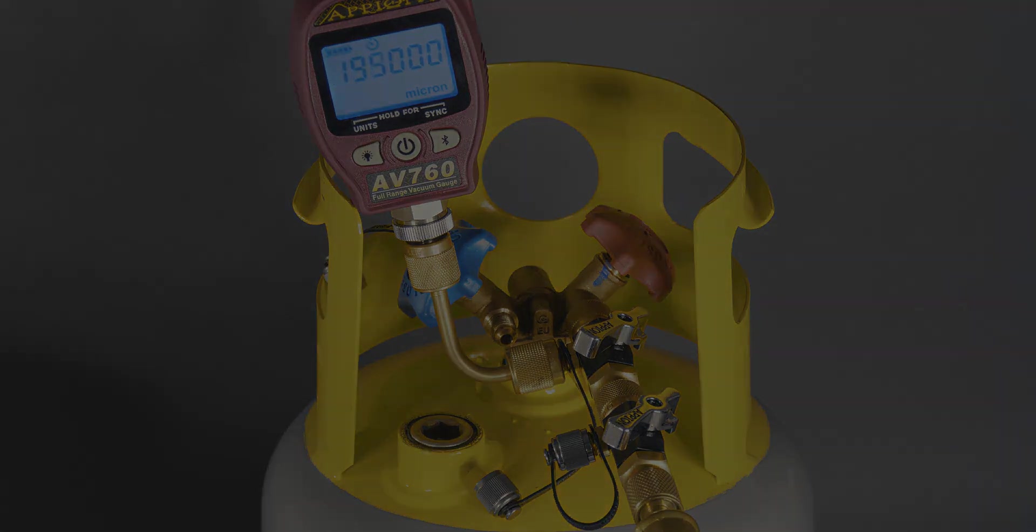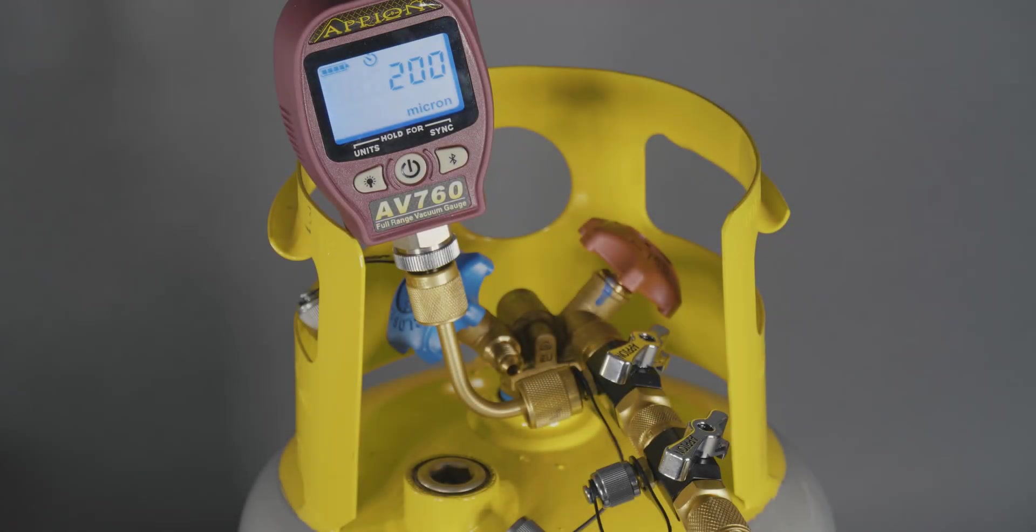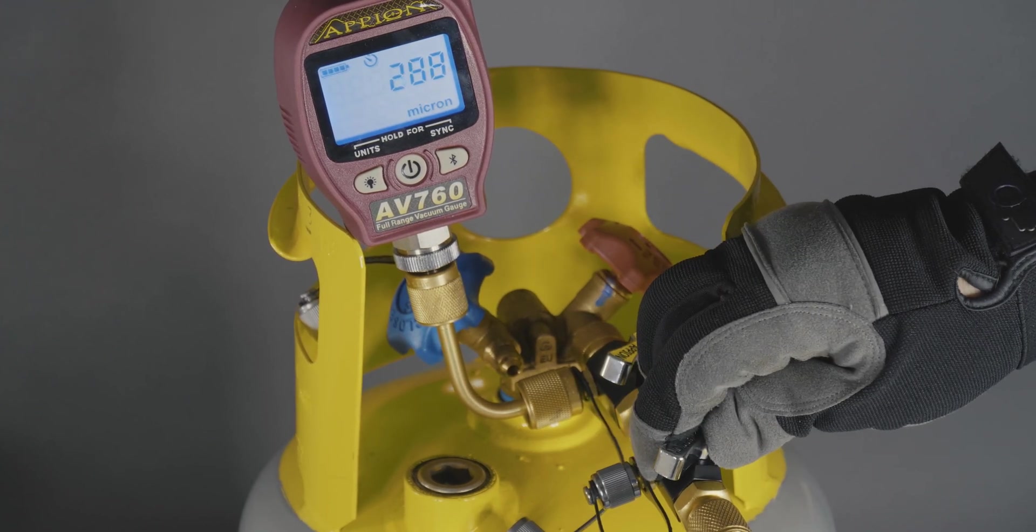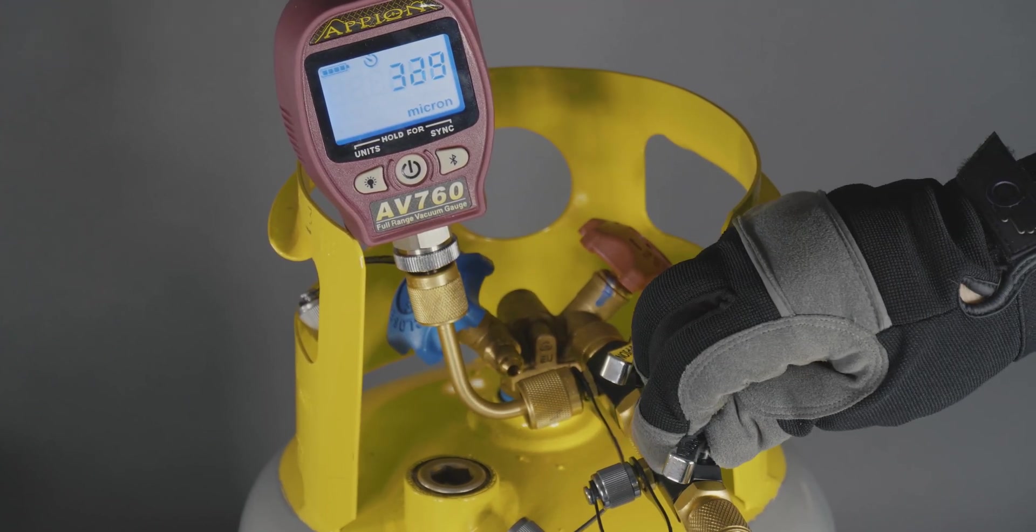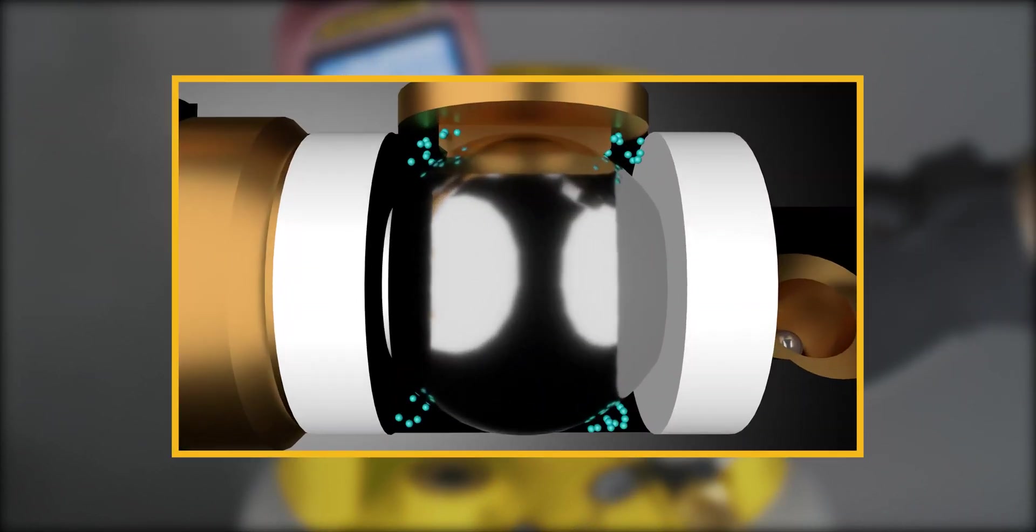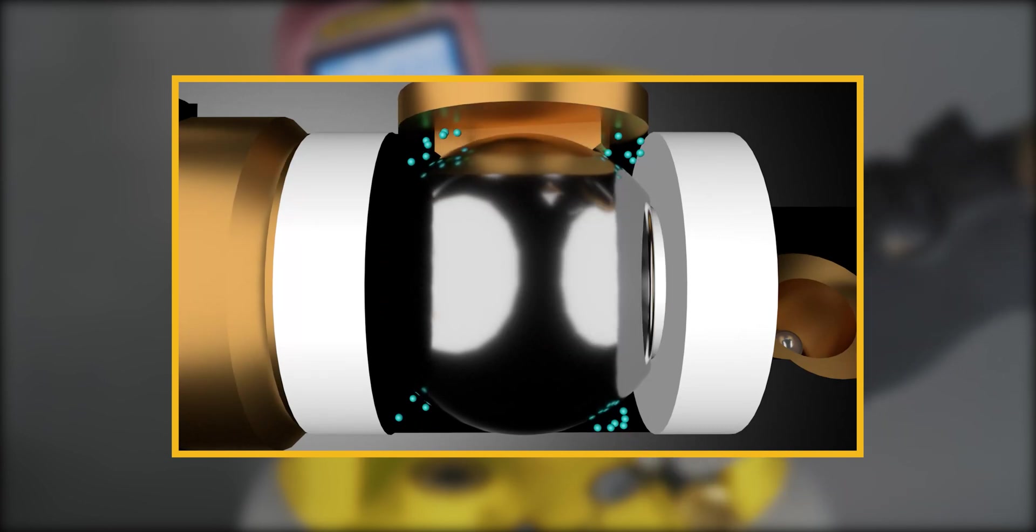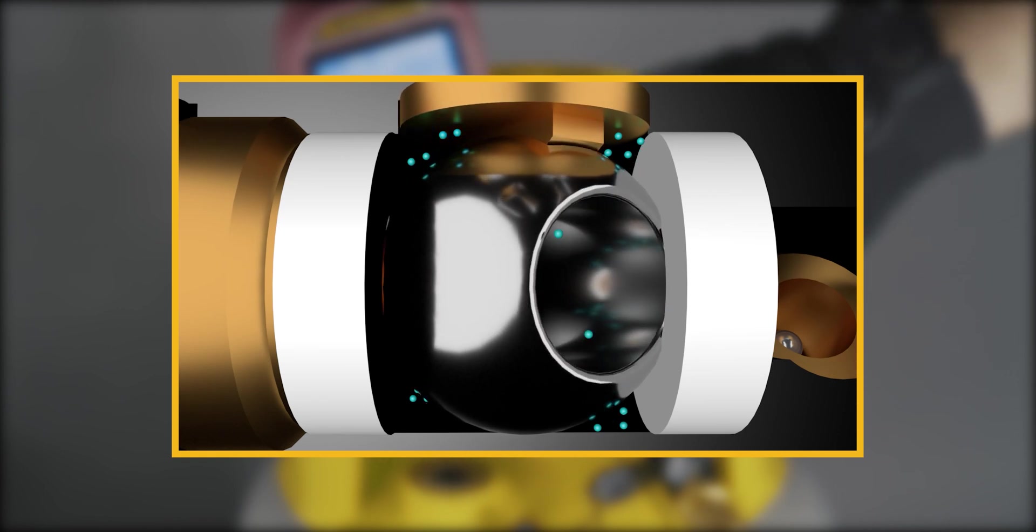Once the gauge reaches 200 microns, begin opening and closing the valves on each of the core tools repeatedly. Because vacuum doesn't equalize like pressure, there are residual air molecules that are trapped within the ball valve and ball valve seals. Opening and closing the ball valve helps these air molecules evacuate.